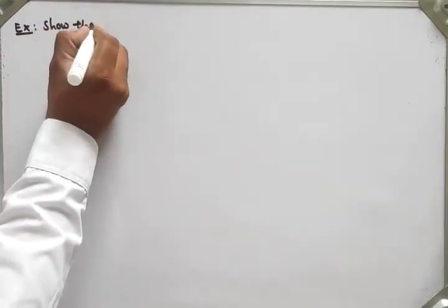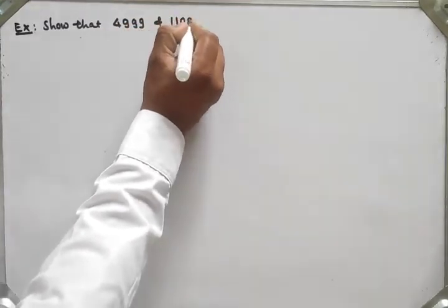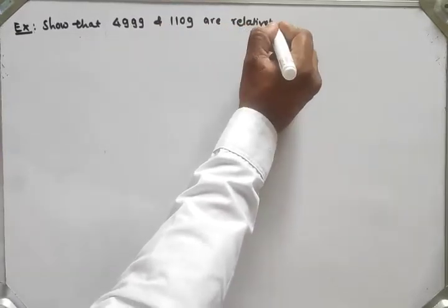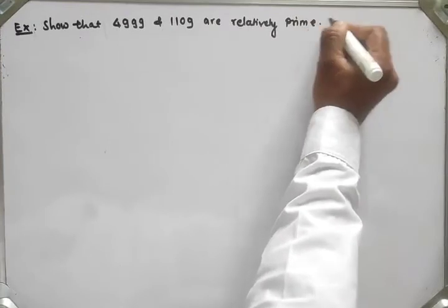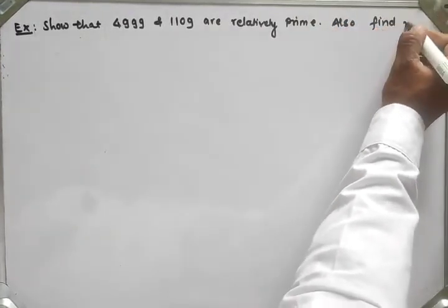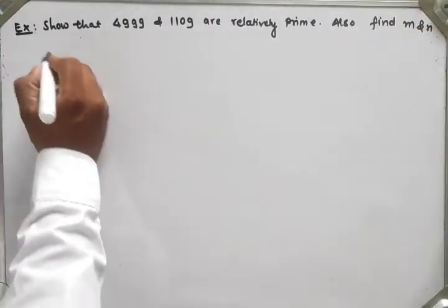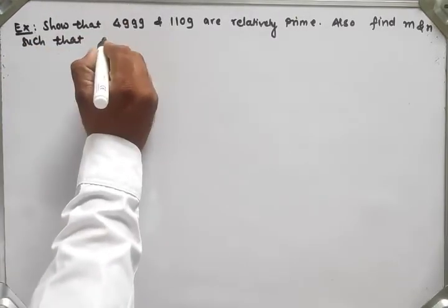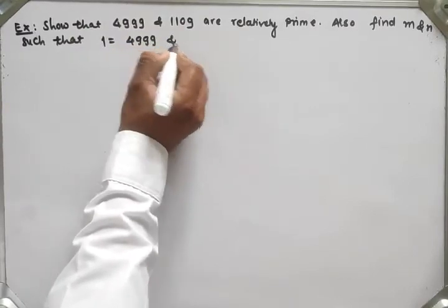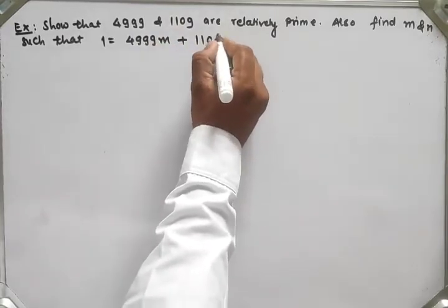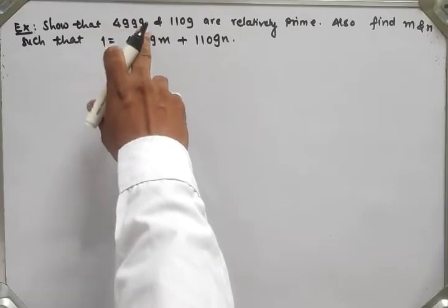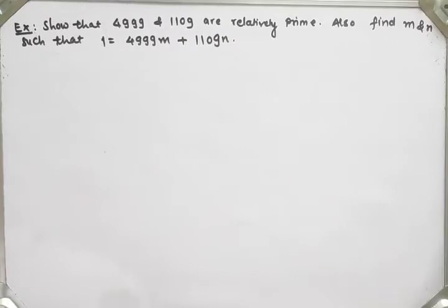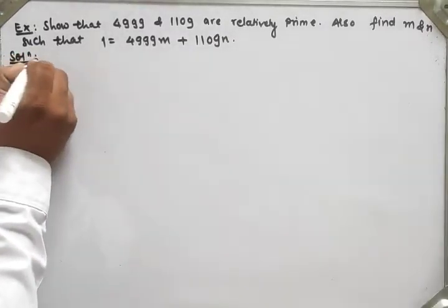Next example: show that 4999 and 1109 are relatively prime. Two numbers are relatively prime means their GCD is 1, meaning both numbers are co-prime. Also find m and n such that 1 = 4999m + 1109n. First, we have to find the GCD of these two numbers.